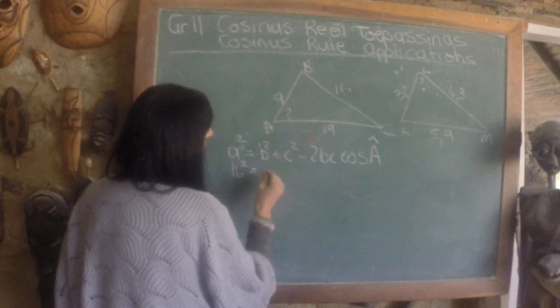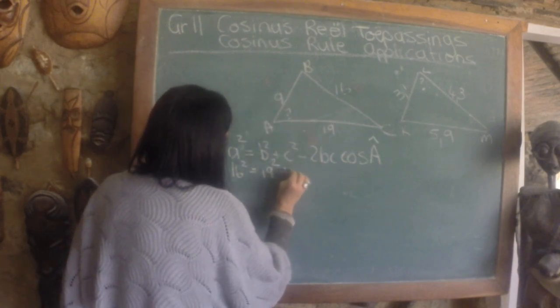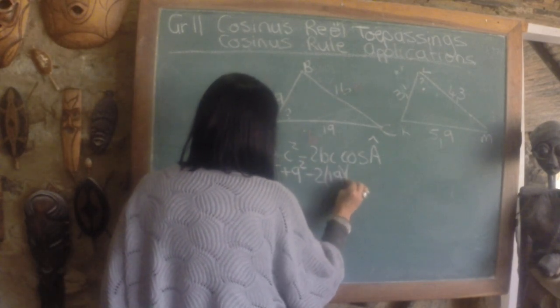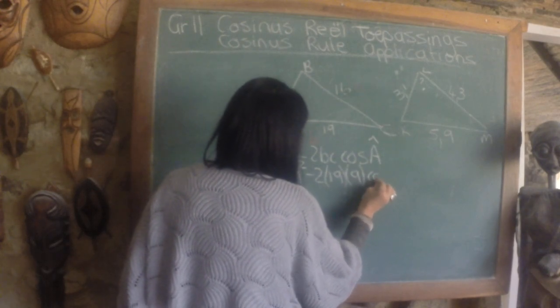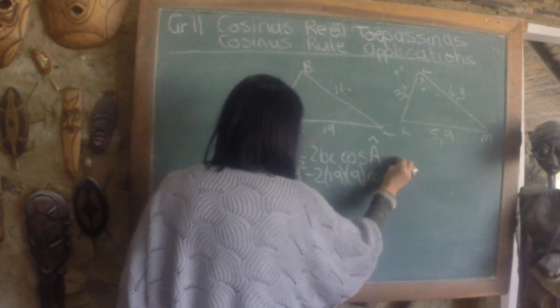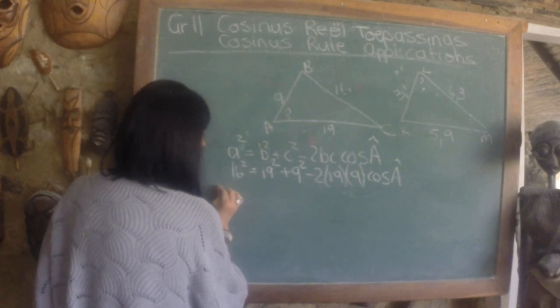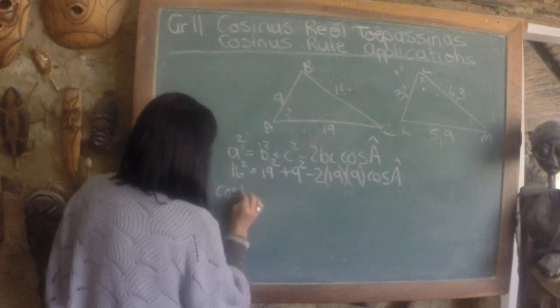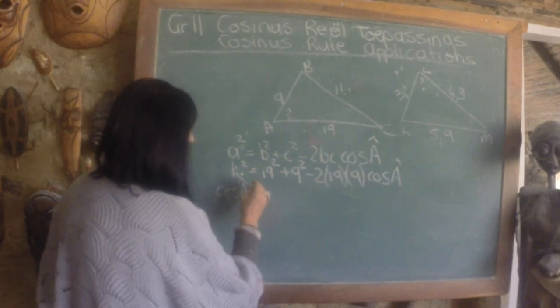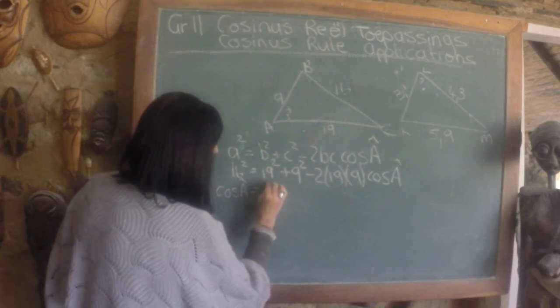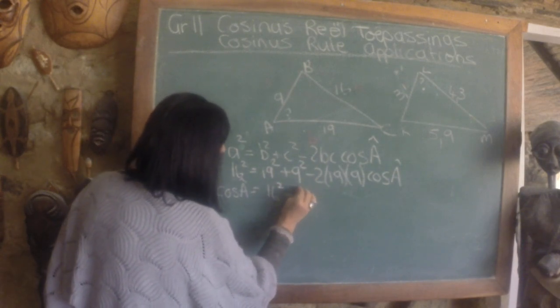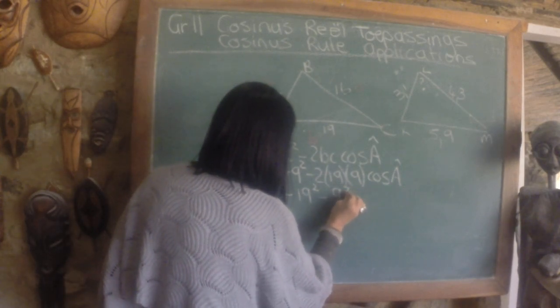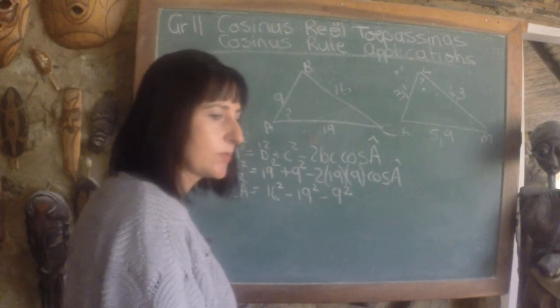equals small b square plus small c square minus 2 times b times c cos of angle a. To get the angle a we'll have the following. We'll have 16 square minus 19 square minus 9 square. Let's do it the right way.